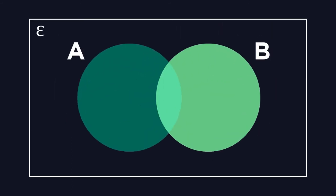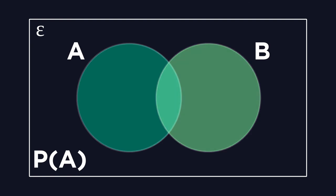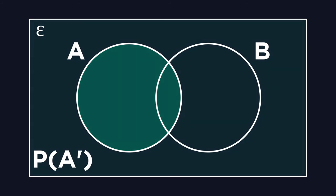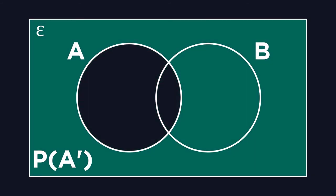On a Venn diagram, with the added set B, the probability of A would look like this. Still just set A shaded. For the probability of not being in A, it would look like this. The inverse.